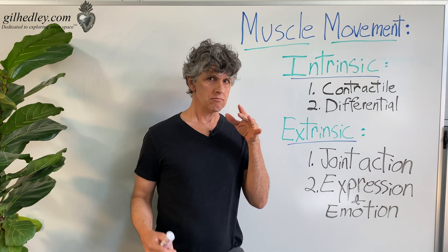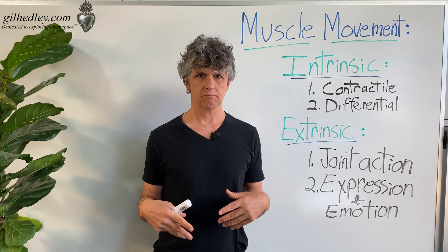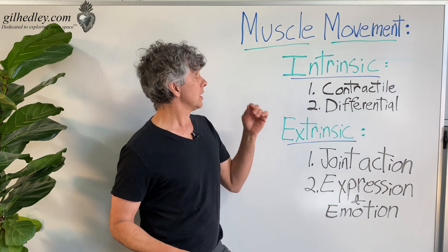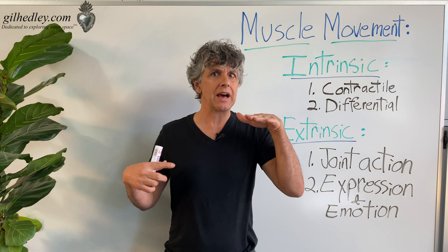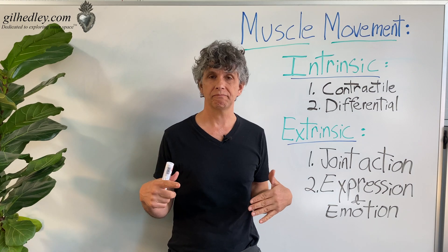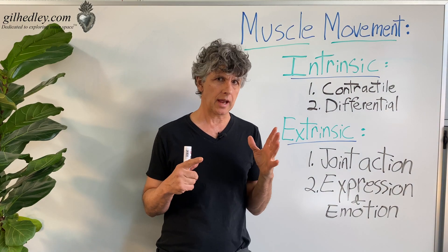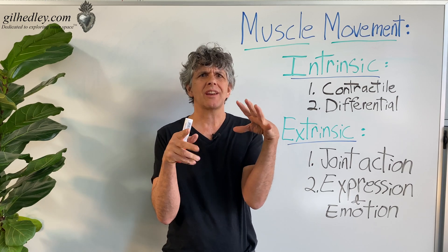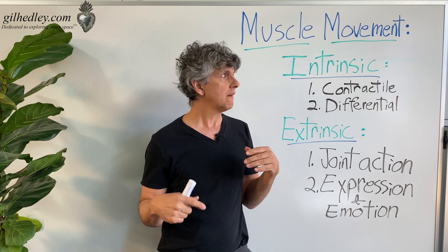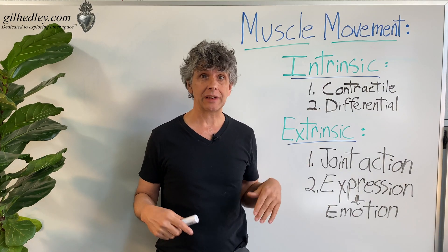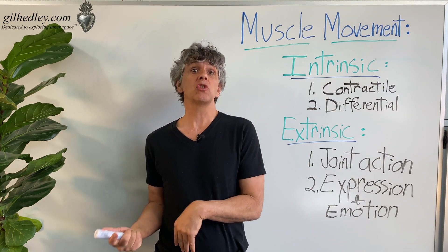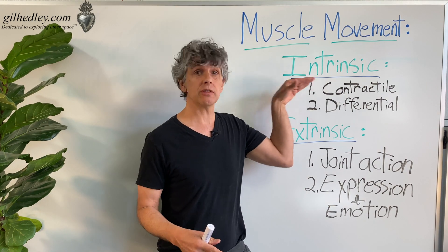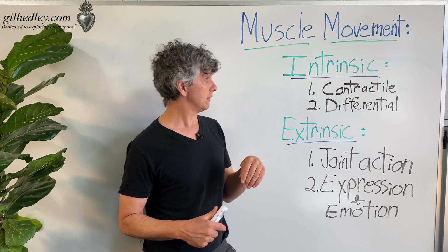Let's talk about muscle movement properties. I'm going to divide muscle movement properties into two types: intrinsic and extrinsic. By intrinsic I mean the movement properties within the muscle tissue itself, and by extrinsic I mean the movement properties caused by the muscle tissue — the result of the intrinsic muscle movement.